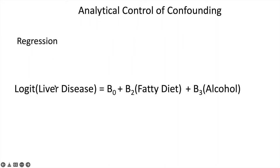For analytical control of confounding, here we have our model where the outcome is the log odds of having liver disease. We have our intercept, our exposure of interest — fatty diet, yes or no — and our confounder, alcohol consumption, yes or no. Once we get actual results for this model, we'll have a coefficient for fatty diet and a coefficient for alcohol. Since this is logistic regression, once we exponentiate these, we're able to interpret this as the odds ratio — the effect of fatty diet when alcohol is held constant. So since alcohol has been controlled in the model, we're looking at the effect of fatty diet independent of alcohol. Similarly, if we were interested in the effect of alcohol, we're looking at the effect of alcohol on liver disease independent of fatty diet.